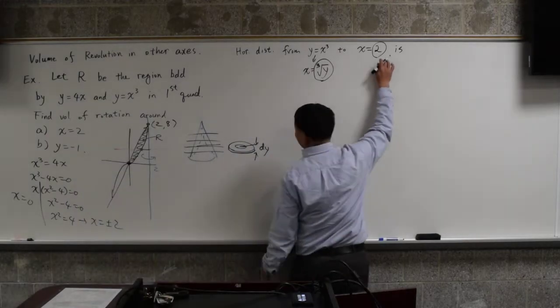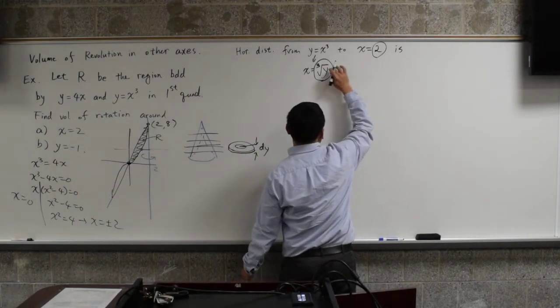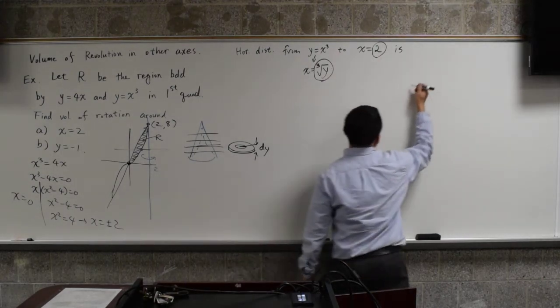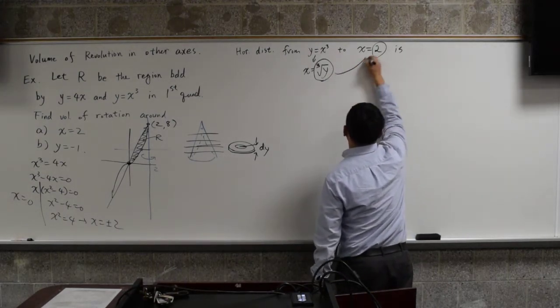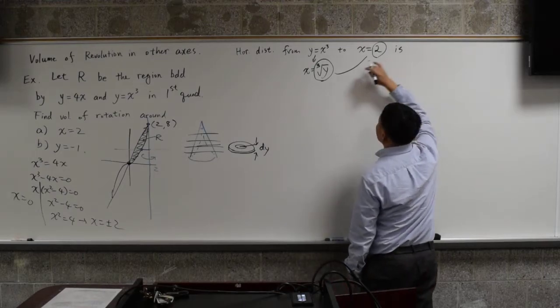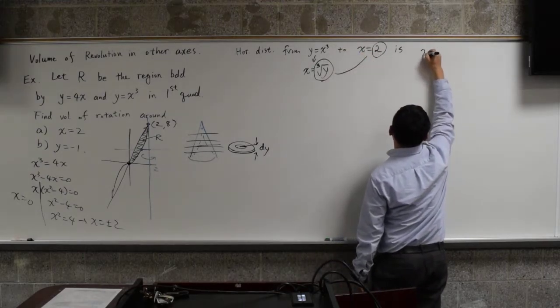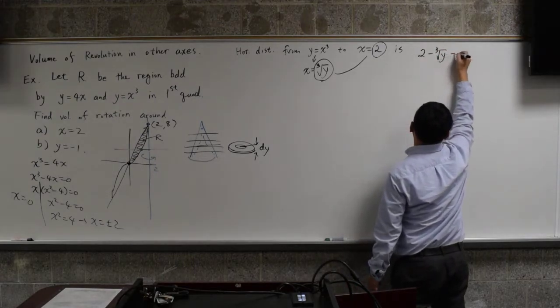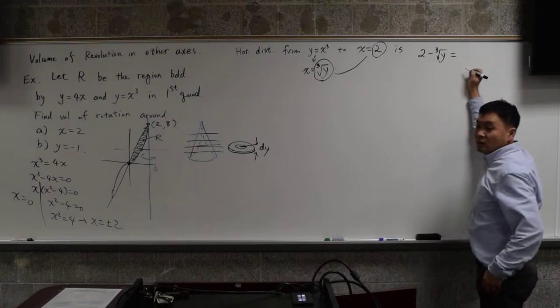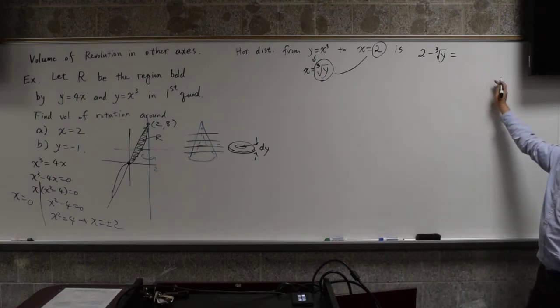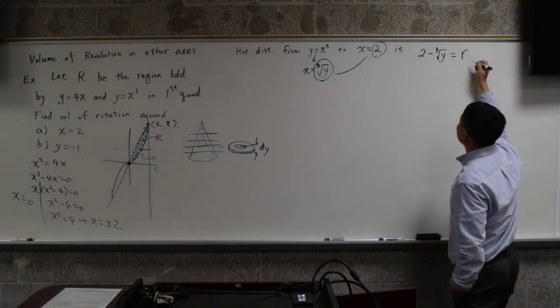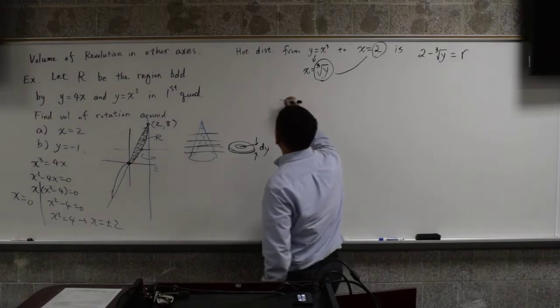So since 2 is on the right side, that's probably bigger than this one, right? So we will do 2 minus this as the distance. So you take the difference, and therefore from here to there is 2 minus cube root of y. And what do you call this? Small r or big r? It's the small r. We agreed on that.